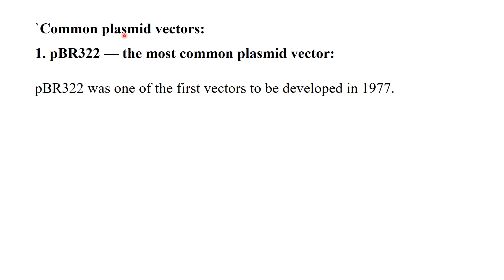The plasmids that occur naturally do not possess all the characteristics needed to be used as a cloning vector. Naturally occurring plasmids may lack important elements such as the origin of replication, selectable markers, restriction sites, or insertion capabilities.